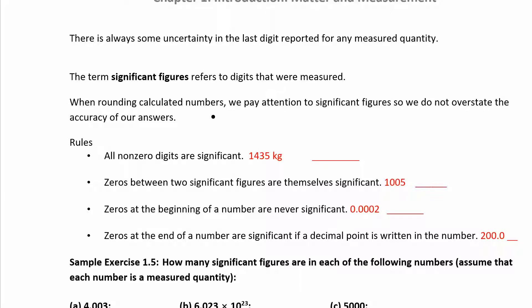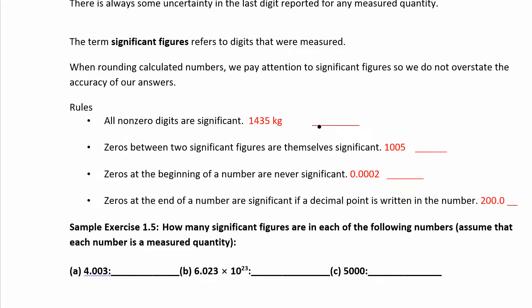When we're looking at significant figures, there are some rules we have to follow. The rules generally come from the placement of zeros — where the zeros are located. Here are four rules for what to do with zeros. If you have a measurement with no zeros in it, all the non-zero digits are significant. So if I put something on the balance and it reads 1435 kilograms, that has four significant figures.